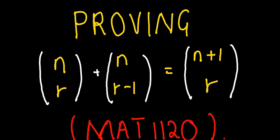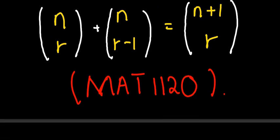In this video we are going to look at a basic application of binomial — proving that n choose r plus n choose r minus 1 is always going to be the same as n plus 1 choose r. This is a basic application of proving one of the rules of binomial equations.